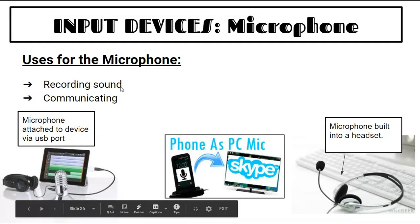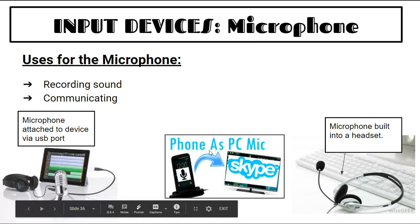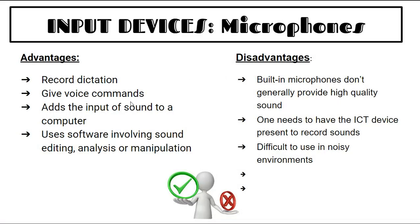Microphones record sound for communication. They can be attached to a device via USB port, your phone can be used as a PC mic, or a microphone can be built into a headset. Advantages: records dictation, gives voice commands, adds sound input to a computer, and is used with sound editing software. Disadvantages: built-in microphones often don't provide high-quality sound, you need an ICT device present to record, and it's difficult in noisy or windy environments.